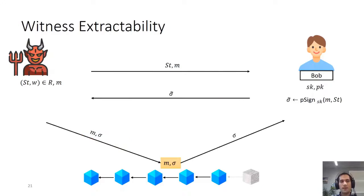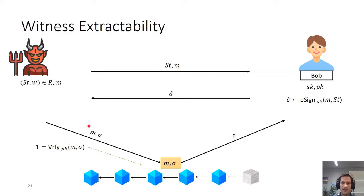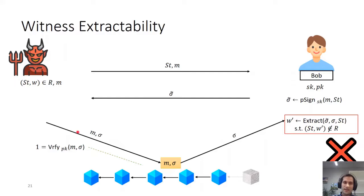Finally, we have witness extractability. In this case we have a malicious Alice who sends a statement and message to Bob. Bob generates a pre-signature and Alice comes up somehow with a full signature. If the signature verifies—meaning Alice can publish this signature-message pair to the blockchain—it should not be the case that Bob cannot extract a valid witness. In other words, if this valid signature is published, Bob will always be able to extract a valid witness.